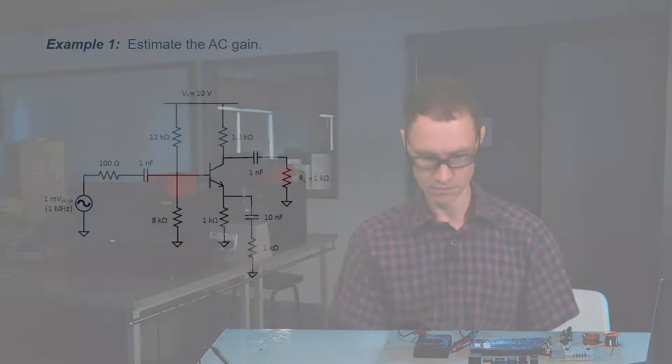Negative 1, that is, because it's a common emitter configuration. Let's work it in detail and see how close our estimate was.